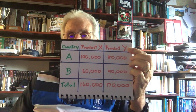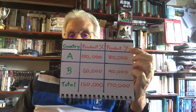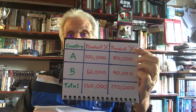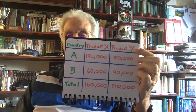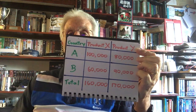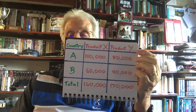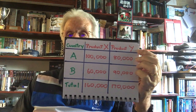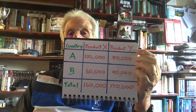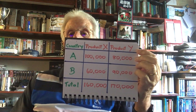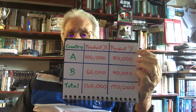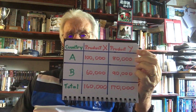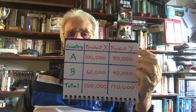Suppose there are only two countries in the world — A and B, think Australia and Britain — and only two products: X (x-ray machines) and Y (yogurts). The two countries are identical in size and in the resources available to them; it's how they mix and use those resources that creates the difference.